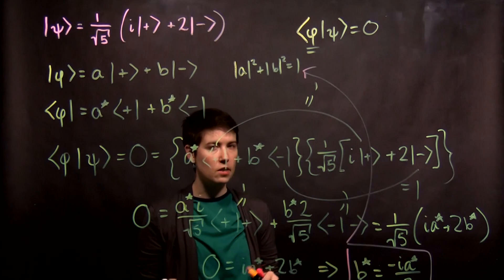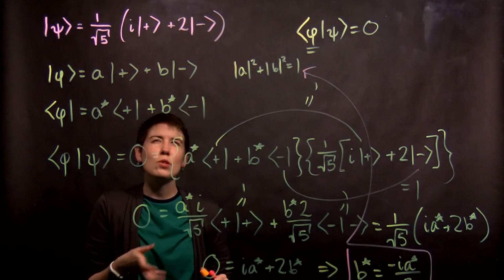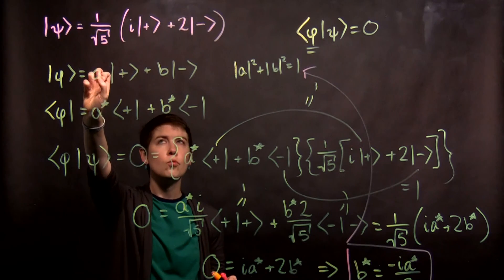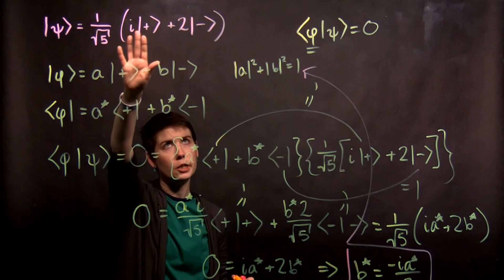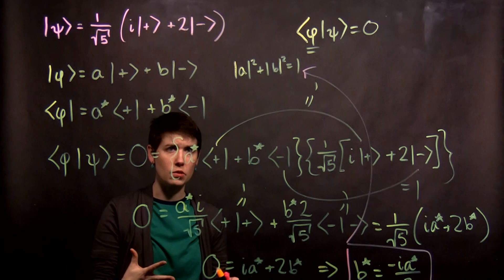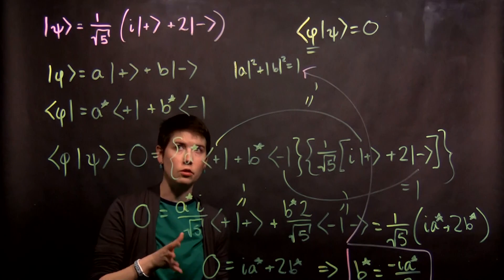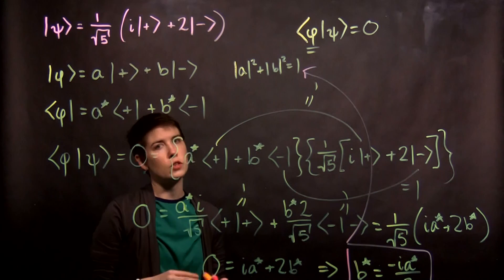There's going to be some overall phase that you can always choose. And so it's actually quite typical to choose this first coefficient to be real, rather than choosing it to be imaginary, as we've done here. So I hope that at least helps you get started with these calculations of finding these orthogonal states to our original state.